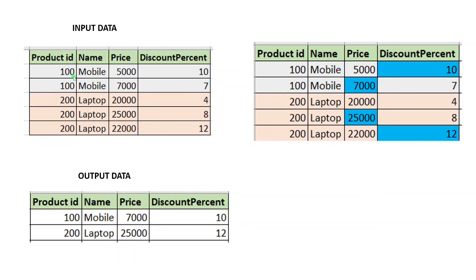Now the requirement is, for each record, we have to consider the maximum value of each column. For example, looking at the price column for product ID 100, there are two values: 5,000 and 7,000. 7,000 is the maximum value, so for the final output I have to consider only 7,000, not 5,000. Coming to discount price for product ID 100, the first record contains 10 and the second record contains 7, so 10 is the maximum, coming from the first record.